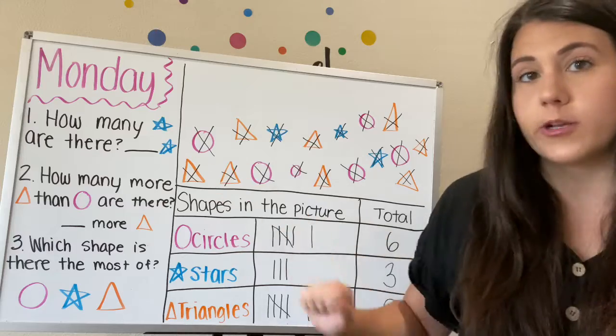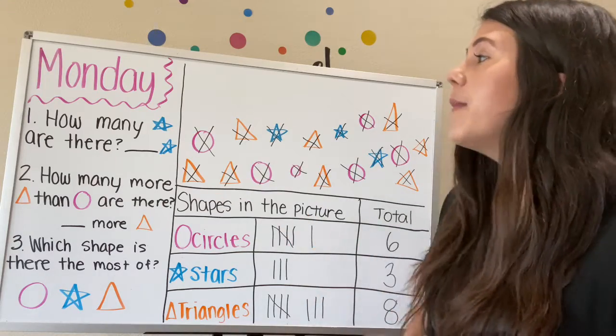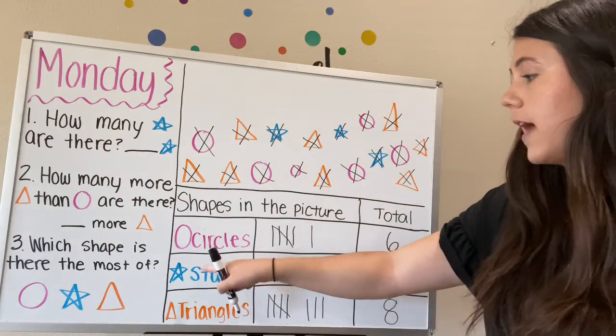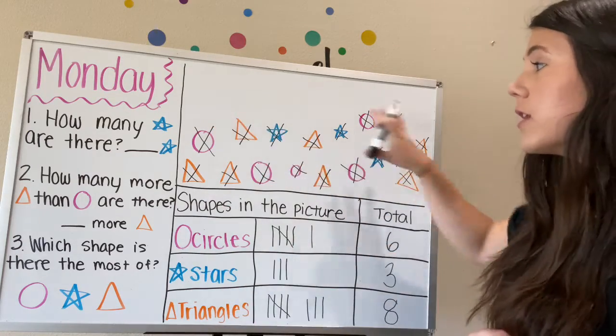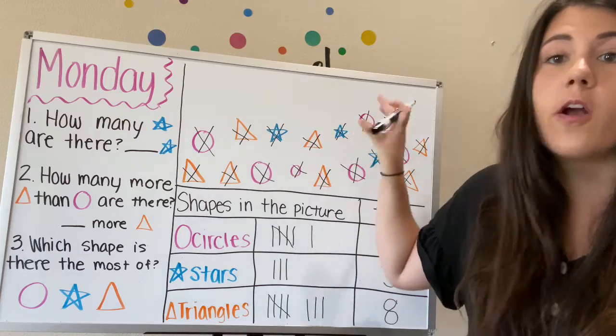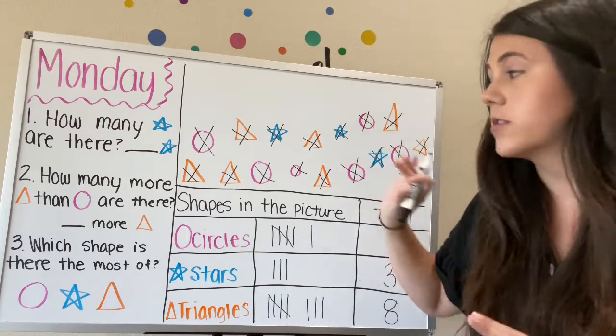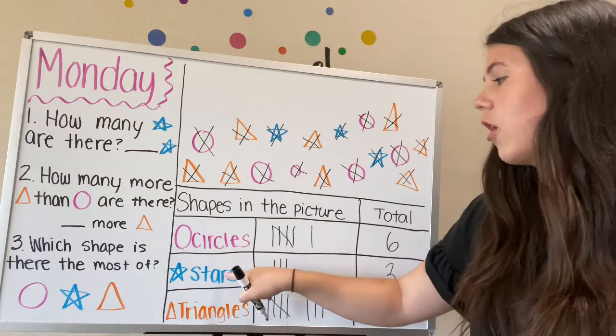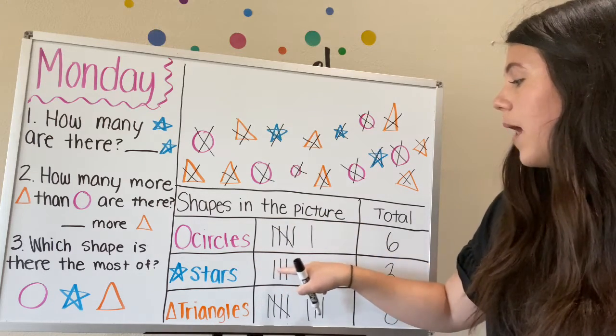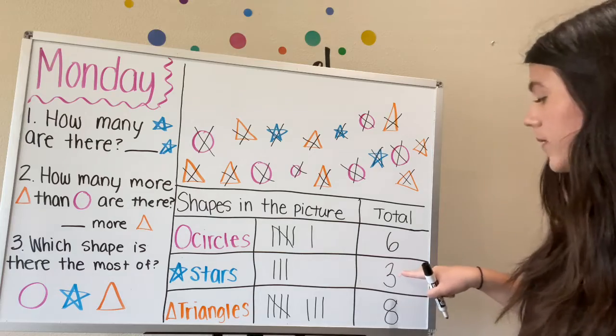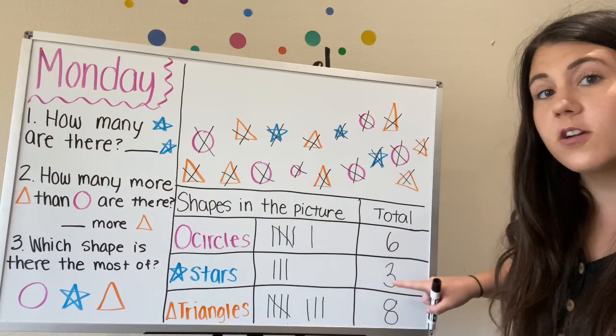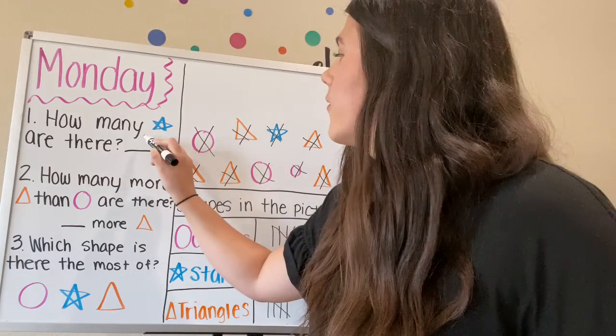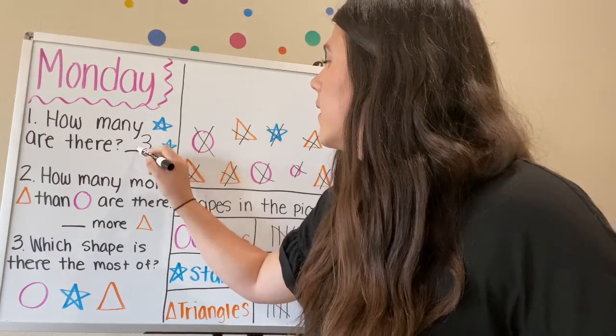So now it is time to answer our questions. Number one, how many stars are there? So we're going to look in our tally chart. Remember, we've already used our picture, so we've gotten all the information that we needed from the picture. So now we're just focused on looking at our tally chart. So how many stars are there? I'm going to look at stars, look at how many tally marks we drew, and then what our total was over here. And there are how many stars? Three. So we're going to write three stars.